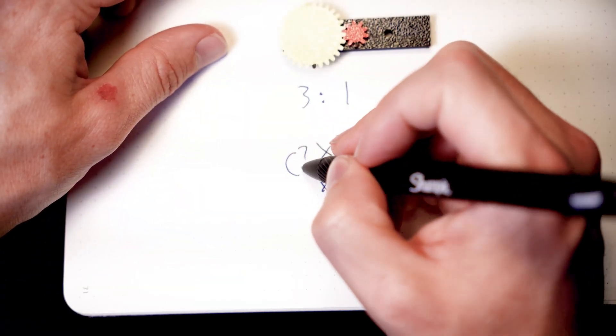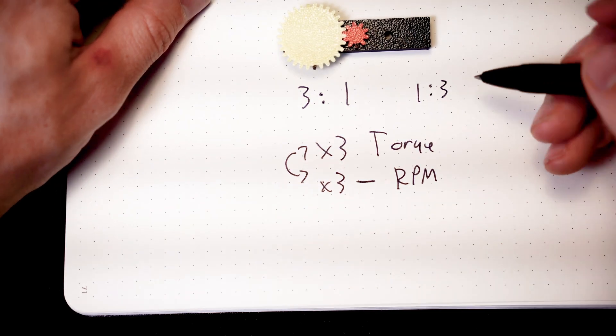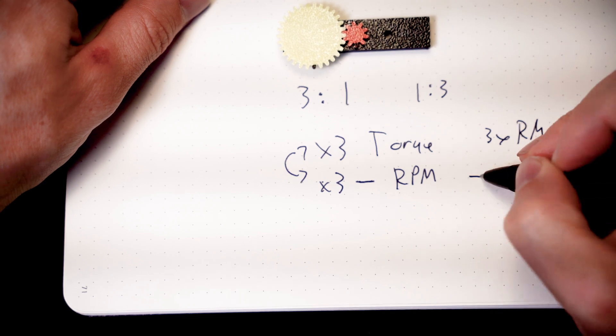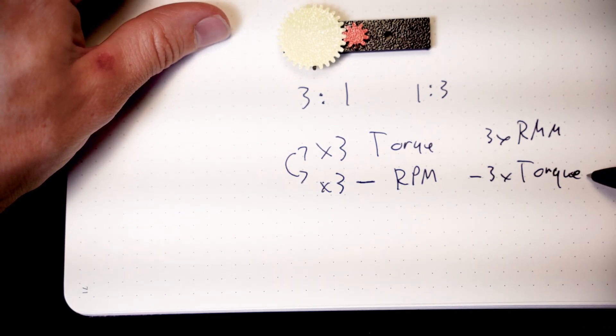If we take it and flip it around, we just simply go ahead and reverse those. We now have a one to three ratio in an overdrive system. And we're going to have three times the RPM, but three times less the torque.